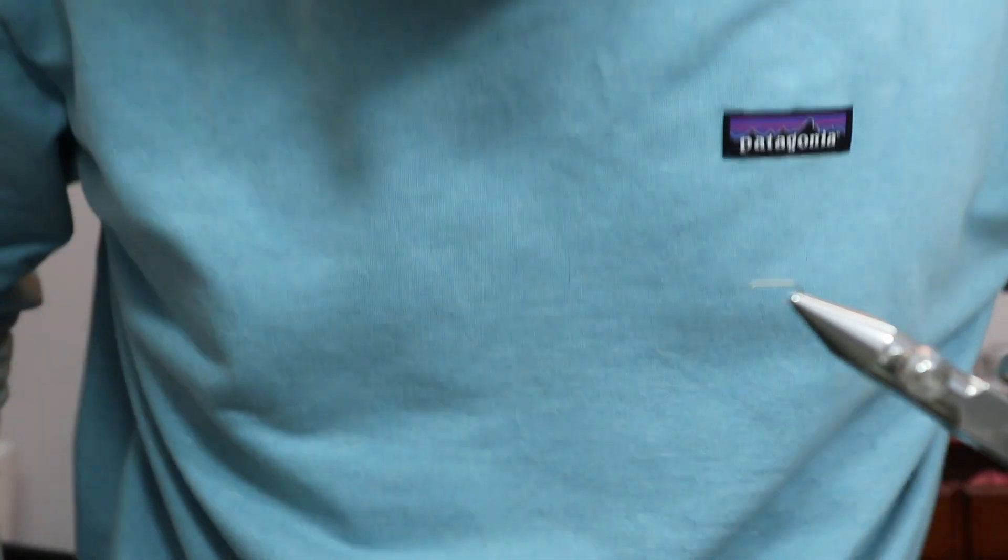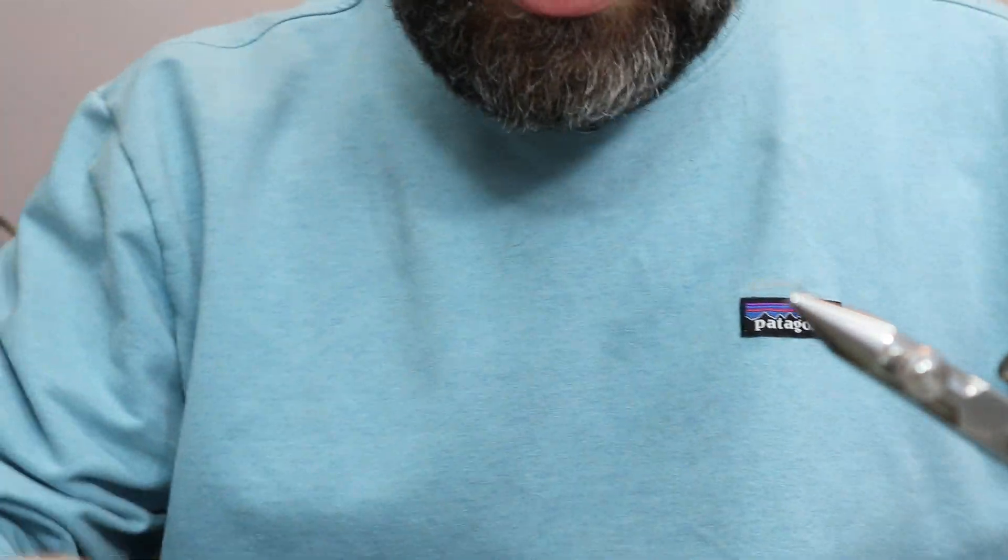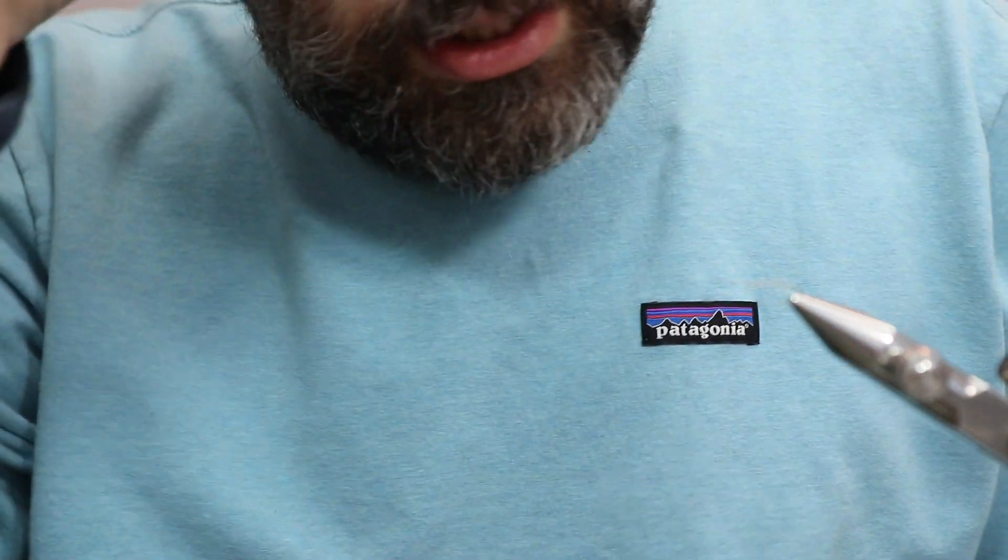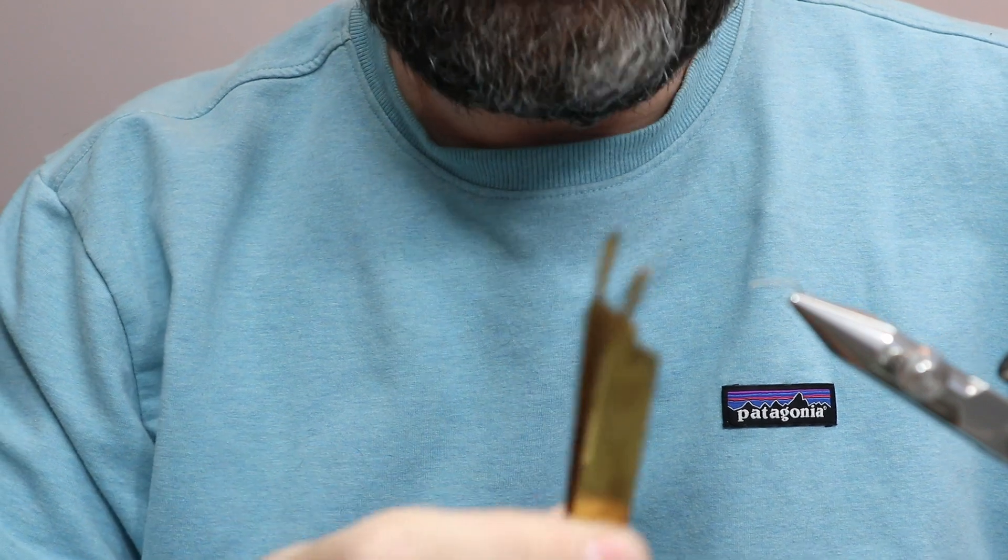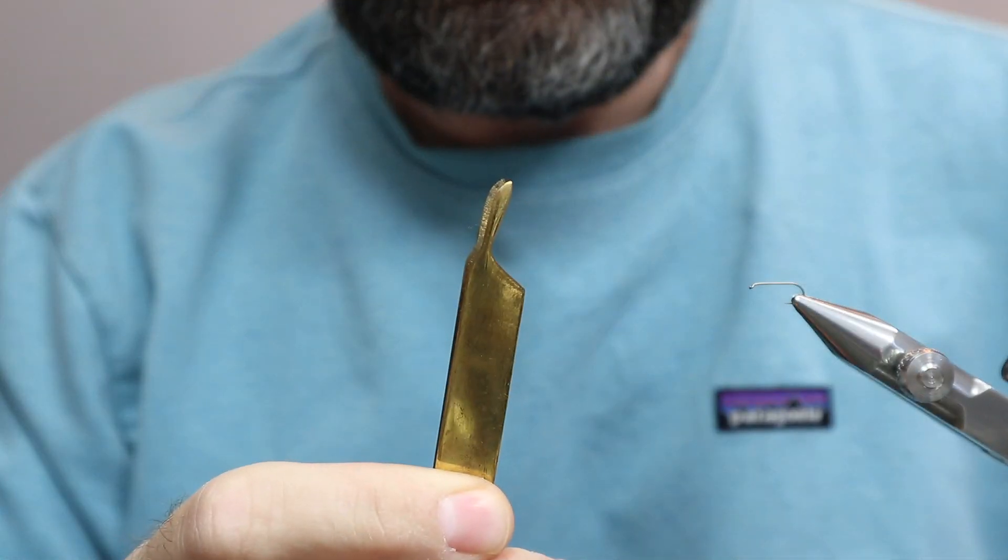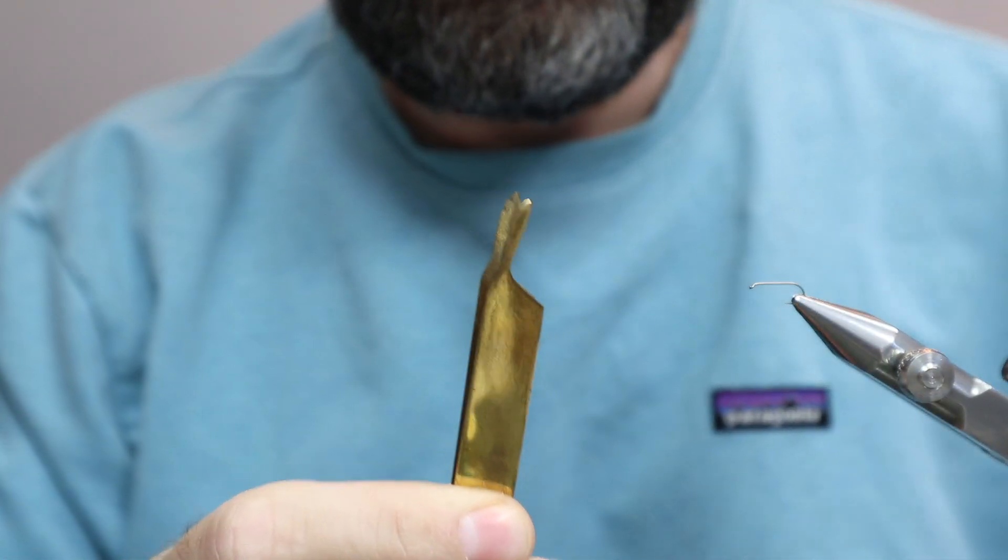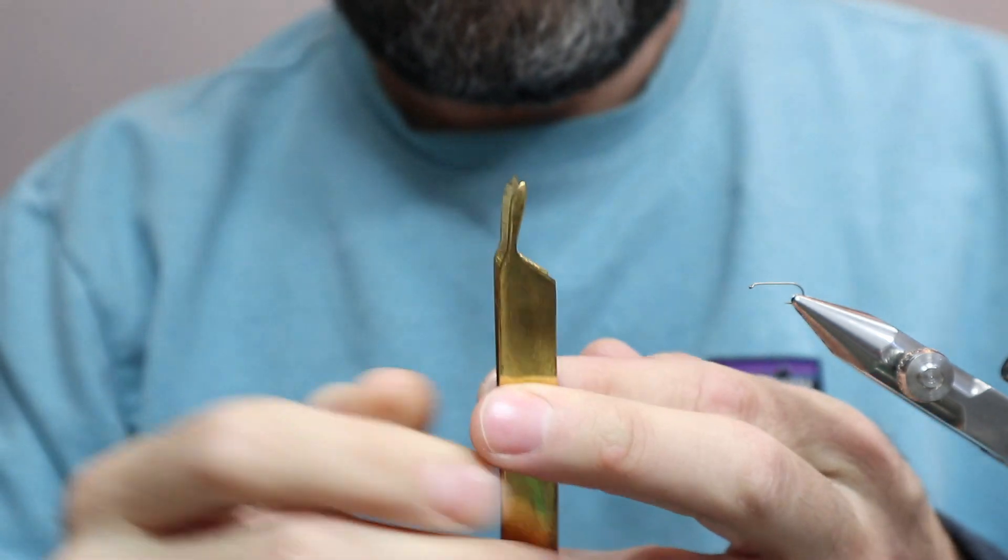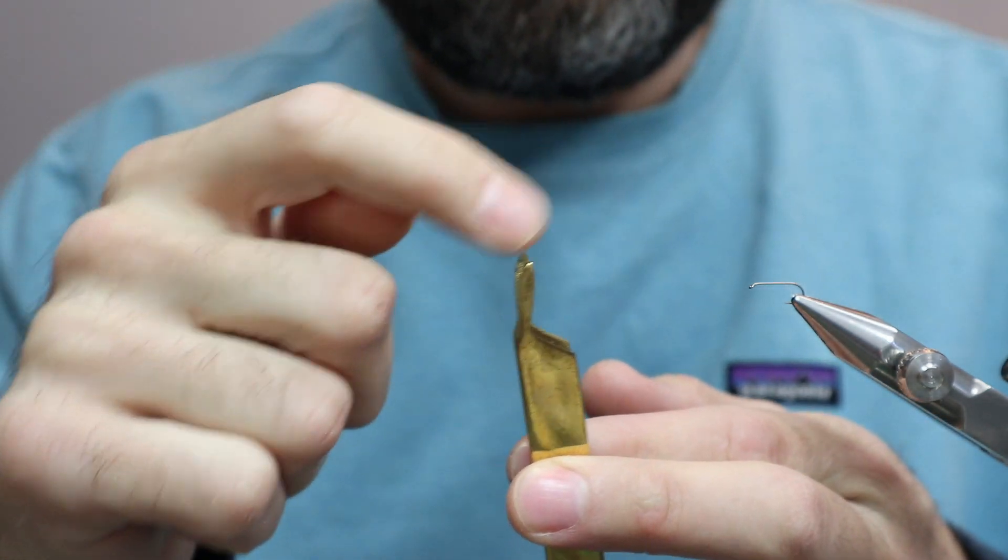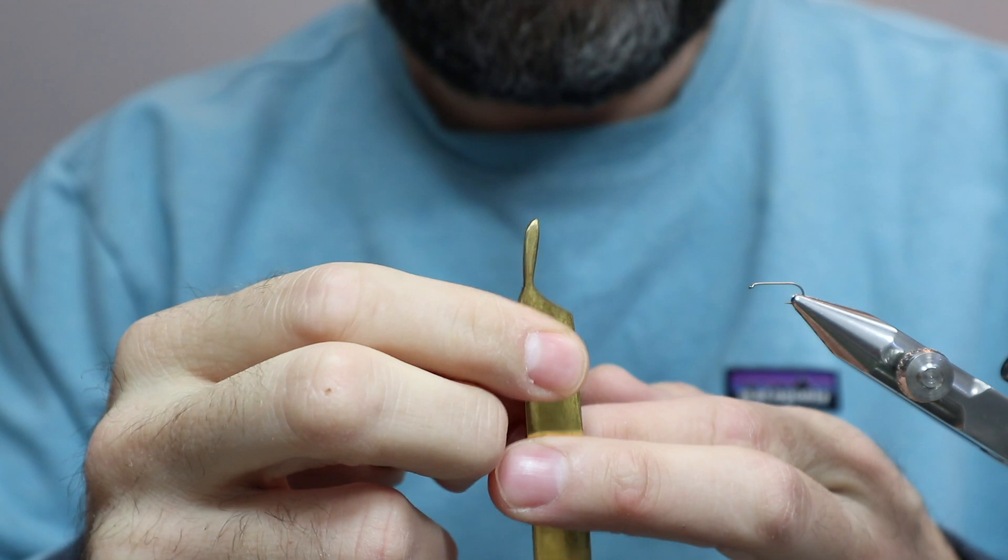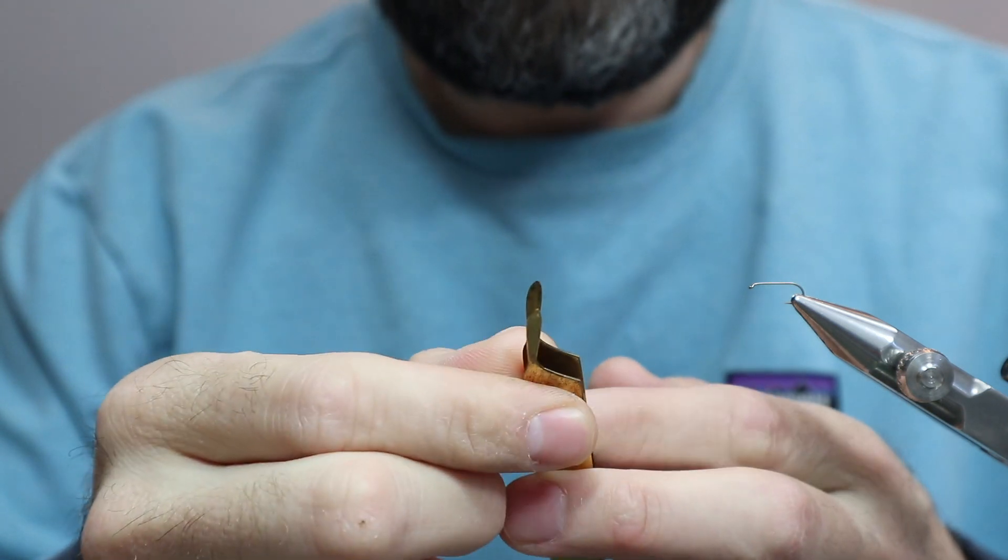So what I do, and what I was going to tell Nicole to do, is you get yourself either a wing burner. See, this is a wing burner. It's a tool to make a wing. So you put a feather in here, and you put your lighter, and you light all around it, and it gets the shape of a wing.